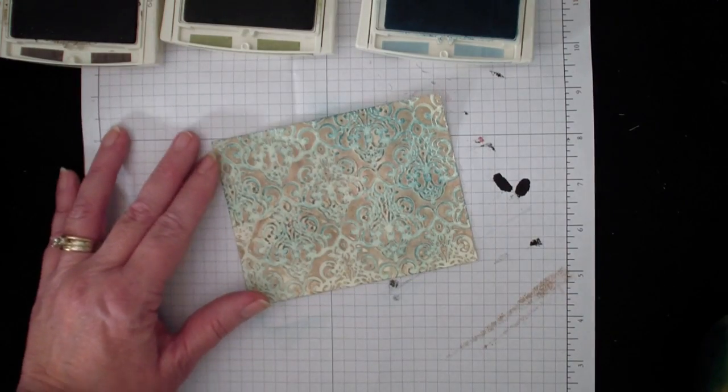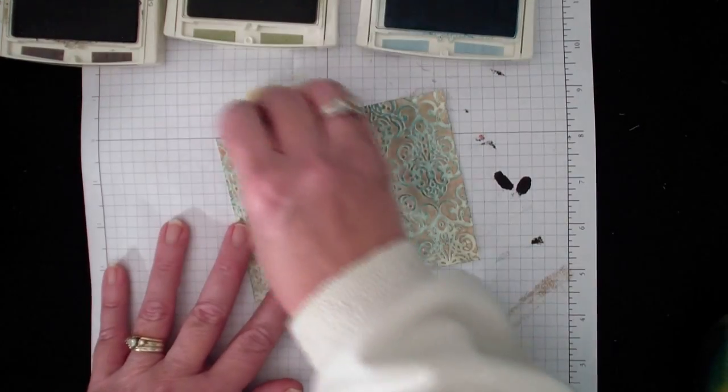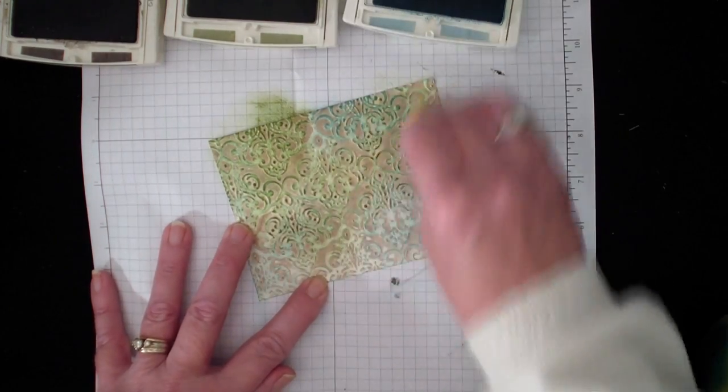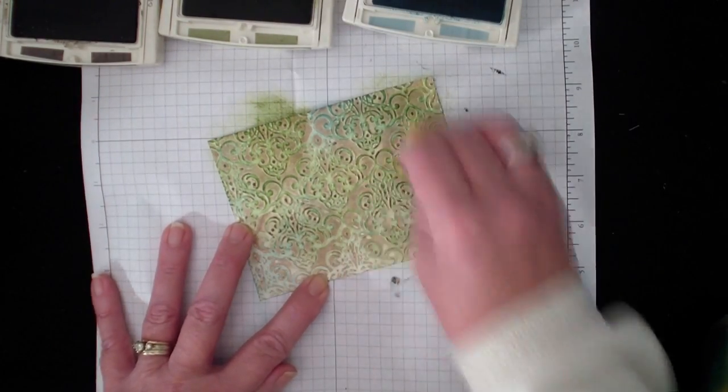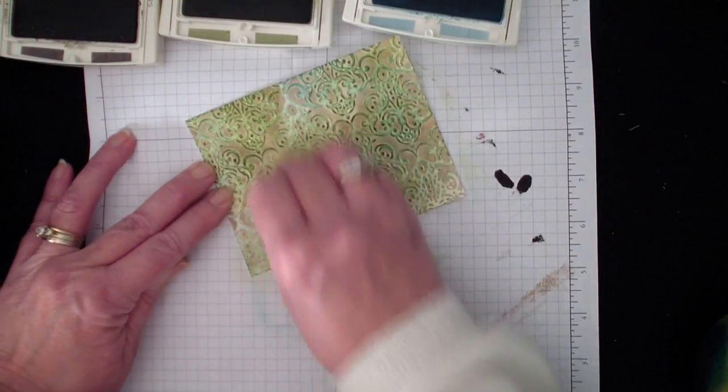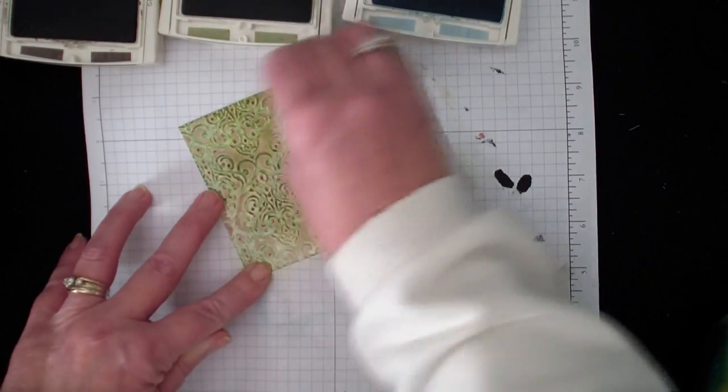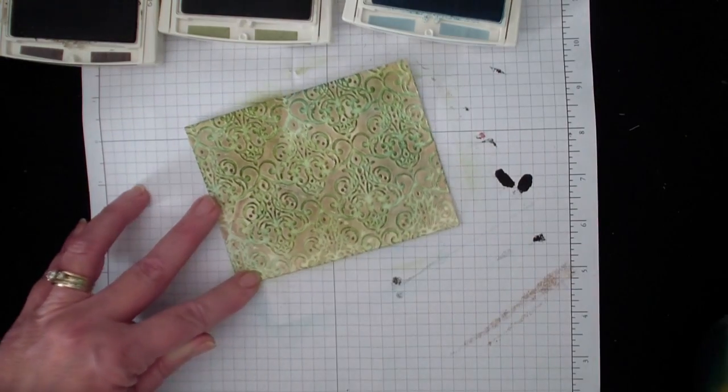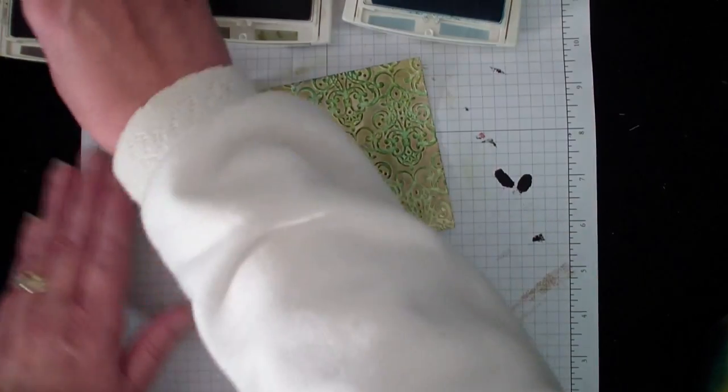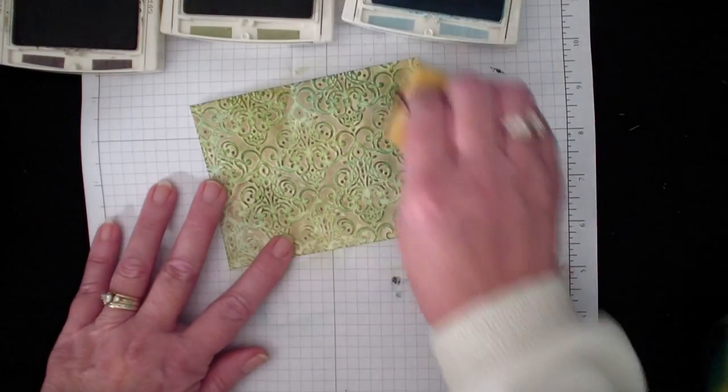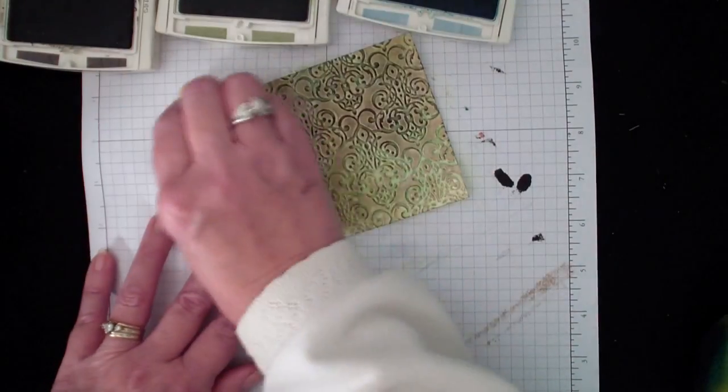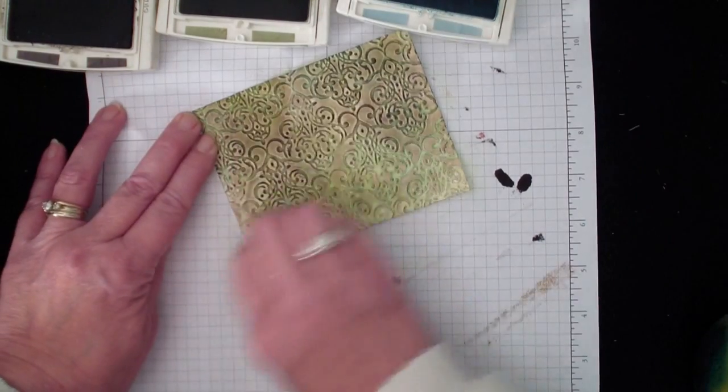Next I'm going to go in with the Old Olive. It doesn't have to be completely covering, but you can start seeing that turquoise look. Next I'm going to go in with the Early Espresso and I'm going to sponge over that. And you're going to start seeing the patina, the faux patina look.